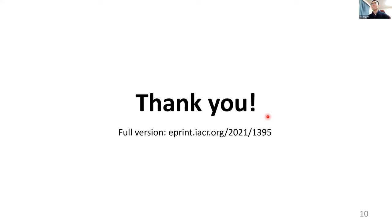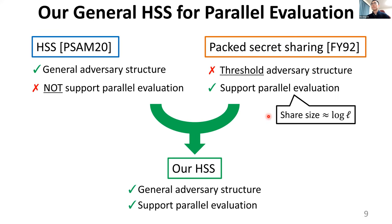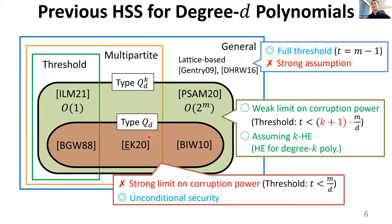I'd like to ask one question. You mentioned that there were previous constructions based on stronger assumptions, and now you have a weaker type QDKL class, but you can get security assuming K-homomorphic encryption. What class of assumptions can you build that primitive from? Our scheme can be obtained from any homomorphic encryption scheme. Homomorphic encryption can be obtained from several cryptographic assumptions, such as Diffie-Hellman, in addition to lattices. So it generalizes to both lattice-based and number-theoretic assumption classes.